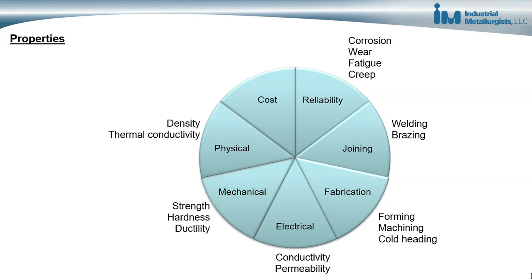Different metals will have different properties, and microstructures can be modified to get different corrosion resistance, wear resistance, fatigue resistance, and creep resistance. There are also costs to consider — different alloys with different processing have different costs. And finally, there are physical properties such as density, thermal conductivity, and other physical properties. When engineering a metal or component, we have to think about all the relevant properties.